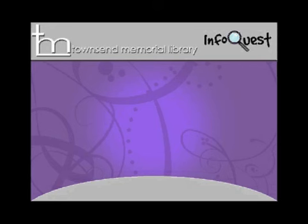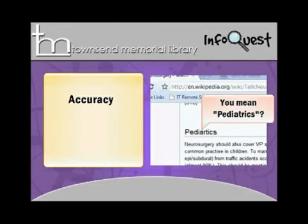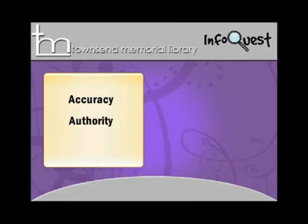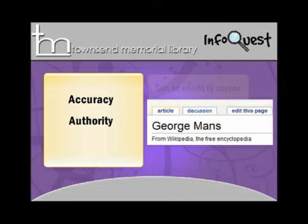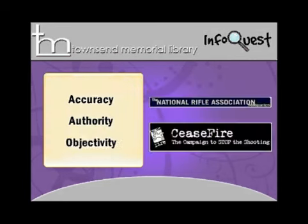When searching the web, ask yourself these questions. Accuracy: does the information presented seem accurate? Are the facts verifiable? Authority: who is the author? What expertise does the author have on this topic? Who sponsors the site? Objectivity: what is the stated purpose of the site? Check the About Us link if there is one. What position or opinion is presented, and does that opinion seem biased? What other sites does this site link to?